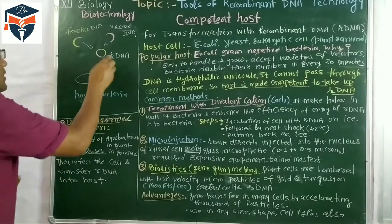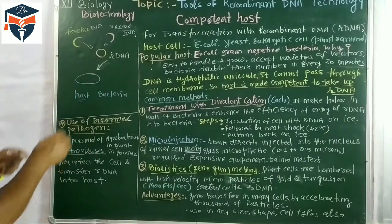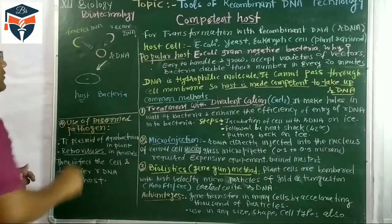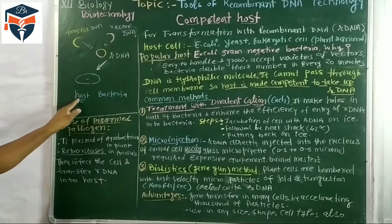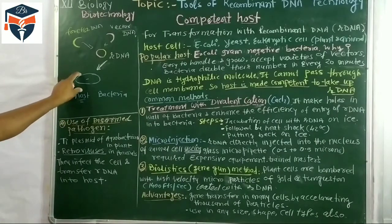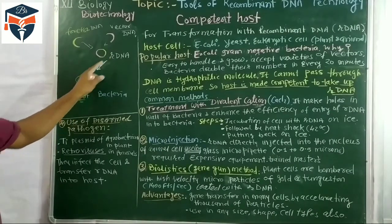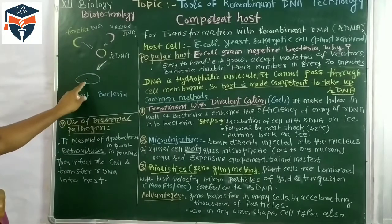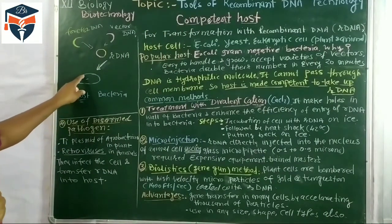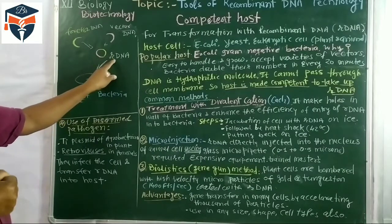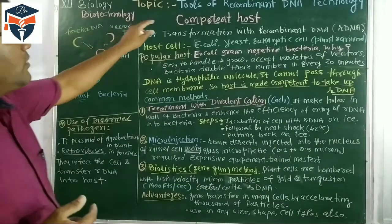This recombinant DNA we have to introduce into another organism — suppose a bacteria. This bacteria is called the host, because we are introducing recombinant DNA into it. The host must be ready to accept this recombinant DNA. If the host is ready to accept the recombinant DNA, it is called the competent host. This means recombinant DNA can easily be introduced in the host — it is called competent host.